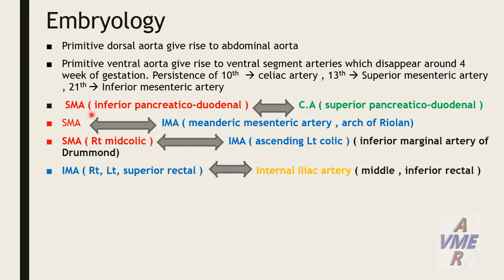We have normal anastomoses and connections between mesenteric vessels. The superior mesenteric artery anastomoses with the celiac trunk via the inferior pancreaticoduodenal artery. The superior mesenteric artery connects with the inferior mesenteric artery via the meandering artery and arc of Riolan. The inferior mesenteric artery anastomoses with the internal iliac artery via the middle and inferior rectal arteries.